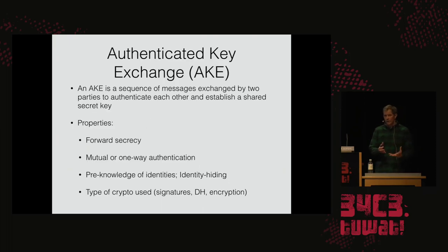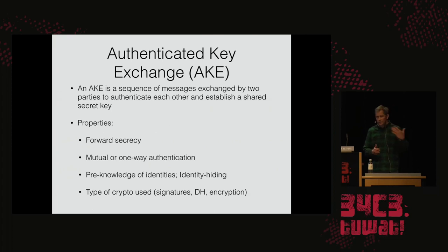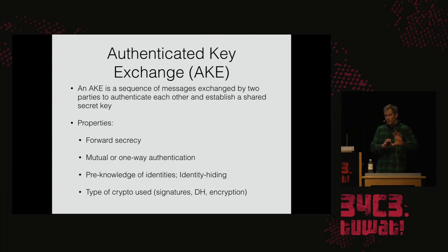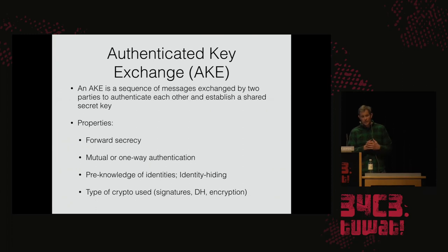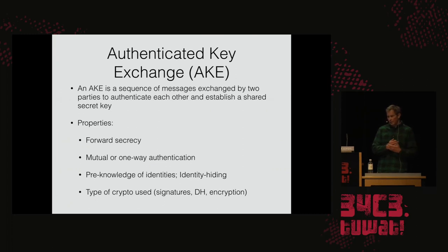To understand secure channel protocols, I want to give some background on the type of cryptography involved. The main cryptographic construct in any secure channel protocol is what cryptographers call an Authenticated Key Exchange, or AKE — a sequence of messages that go back and forth between two parties so they can authenticate each other, and then have a shared secret key at the end. These AKE protocols can have different properties.